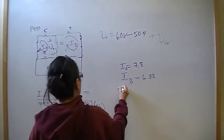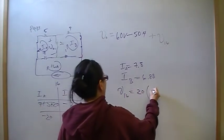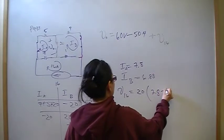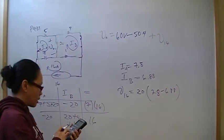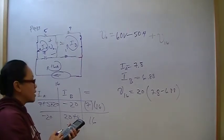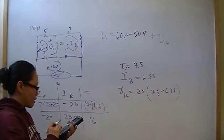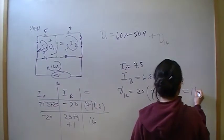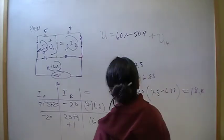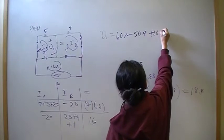So, then, V16, V is equal to IR. Our R is 20. Our I is Ia minus Ib, so 7.8 minus 6.88. So, 7.8 minus 6.88 times 20. So, this should be 18.4. So, here, V16, then, is plus 18.4.